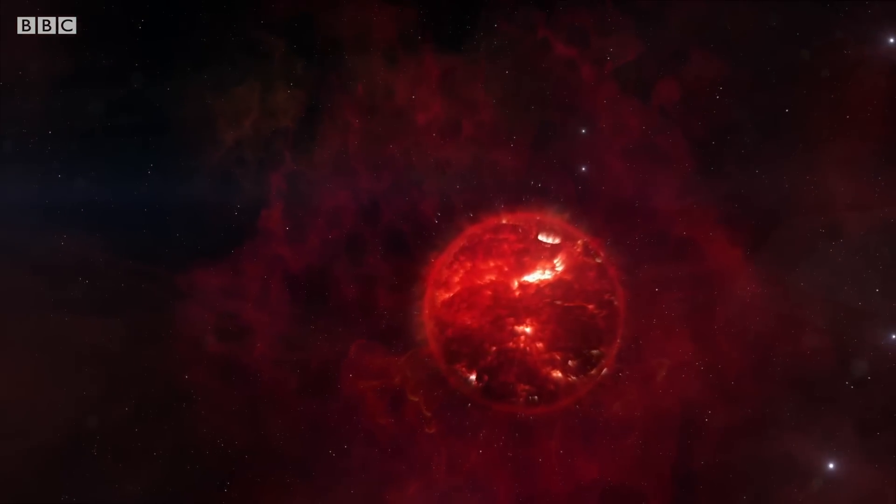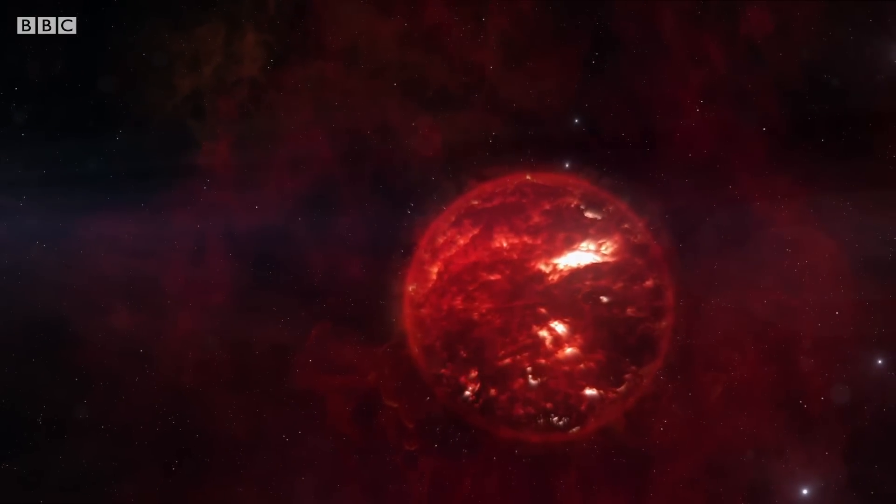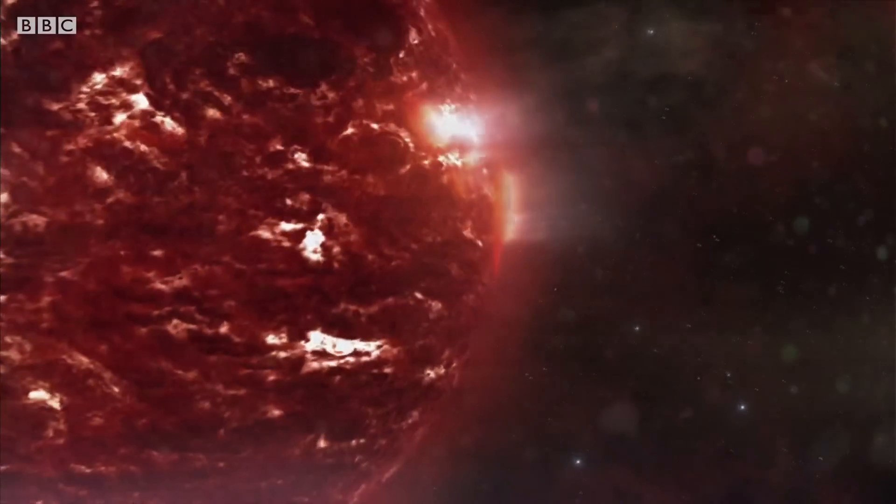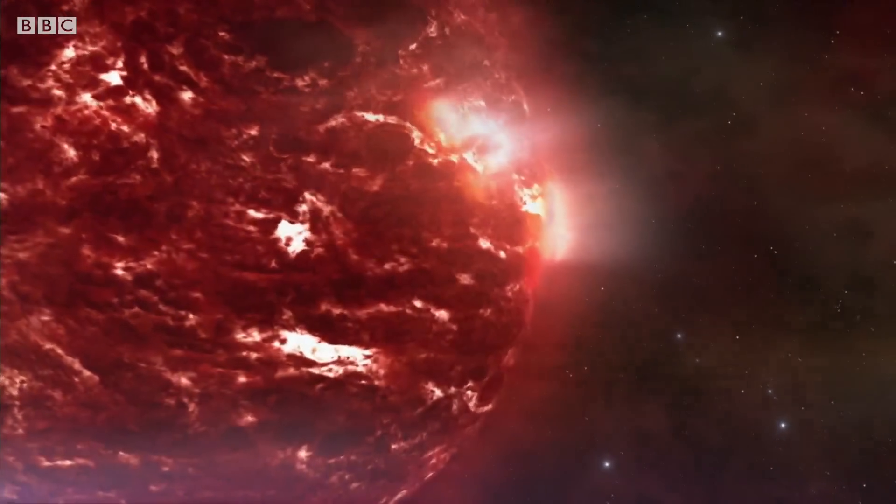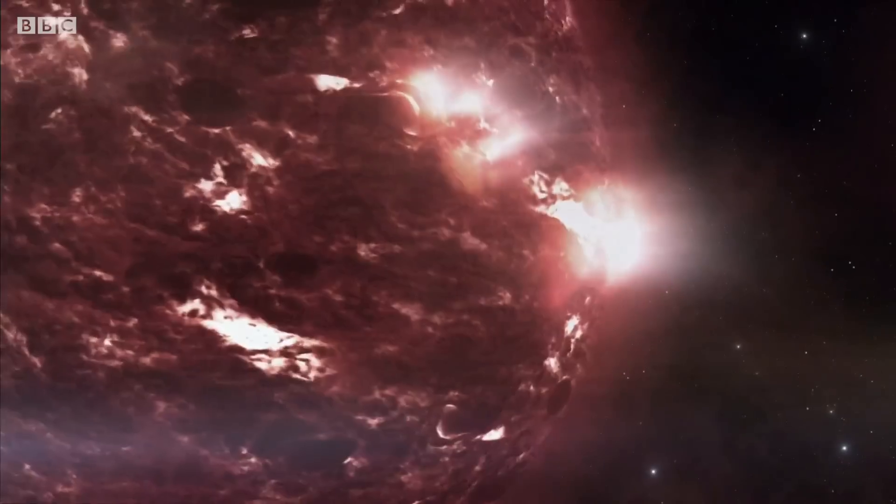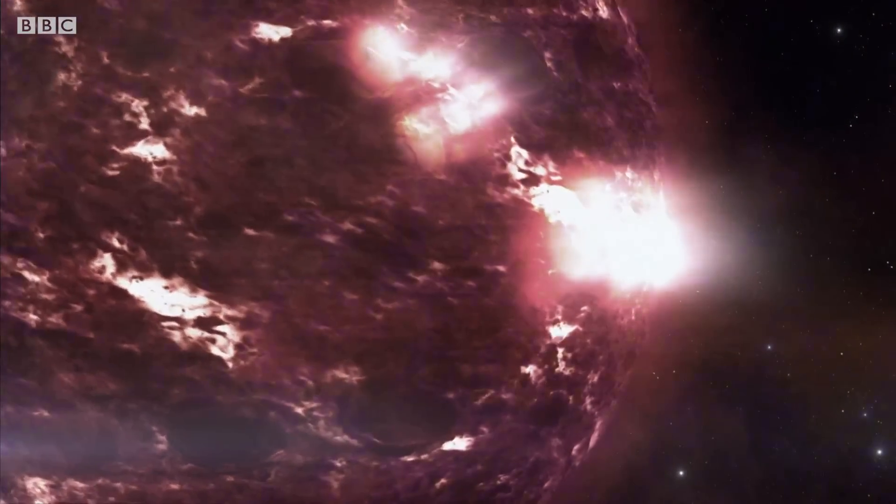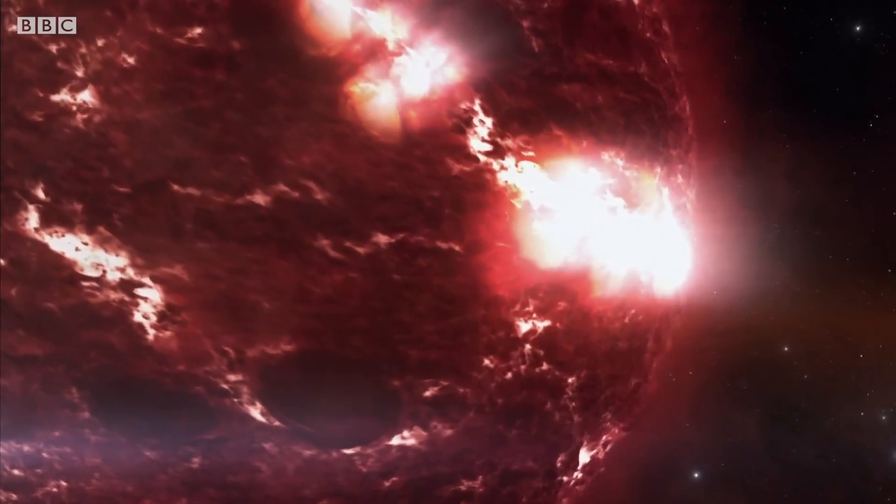This is Betelgeuse in the constellation of Orion. And we know it's extremely unstable because it has dimmed by about 15% in the past decade. Astronomers think that this star could go supernova at any moment. That could mean any time in the next million years. But equally, it could explode tomorrow.